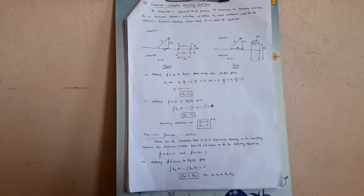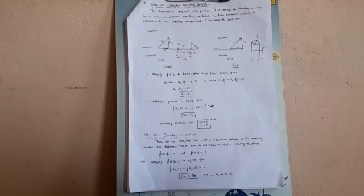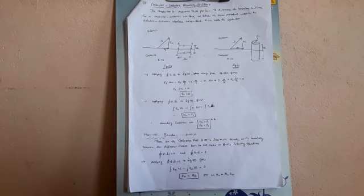The conductor is assumed to be perfect. To determine the boundary conditions for a dielectric interface, we follow the same procedure used for the dielectric-dielectric interface, except that E is equal to 0 inside the conductor.